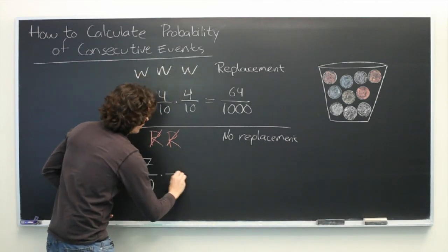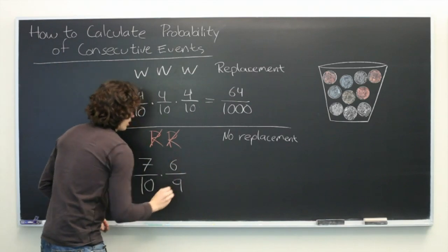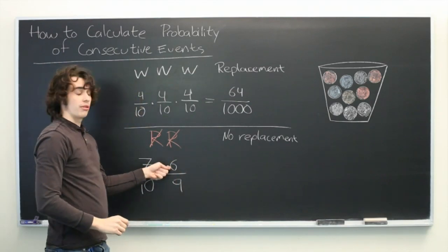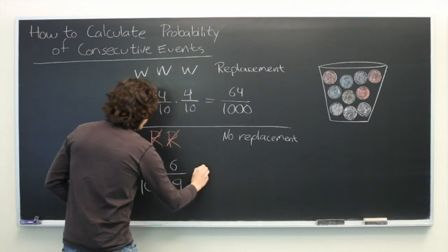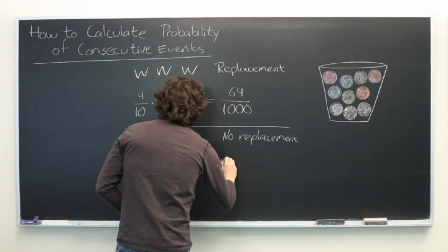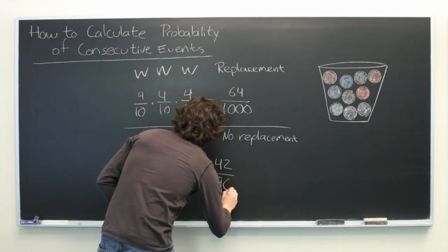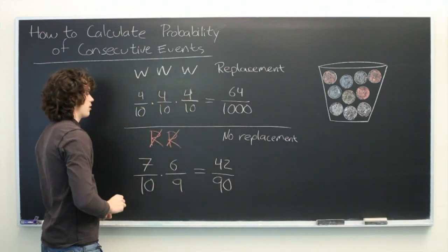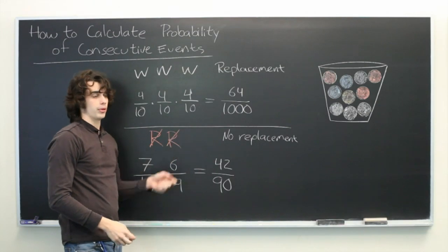There's one less event that's possible, and there are six with the desirable outcome. Then we simply multiply these together as we did before. Seven times six is forty-two, nine times ten is ninety. We get that there is a forty-two over ninety chance of getting two non-red balls without replacement.